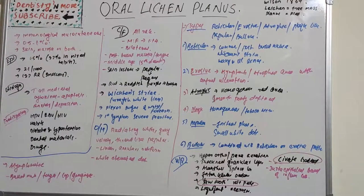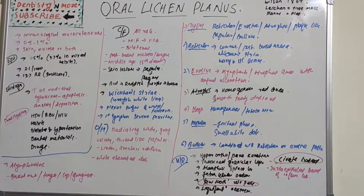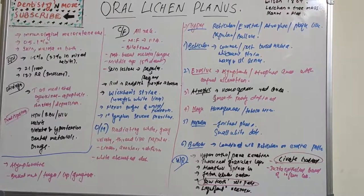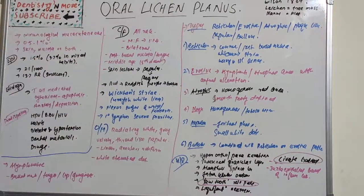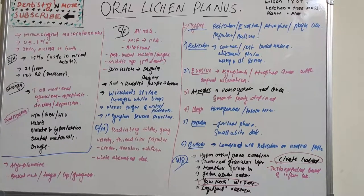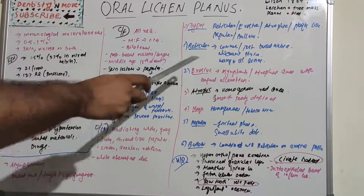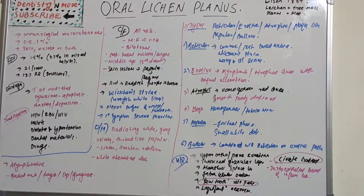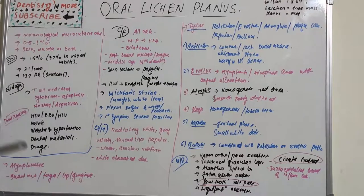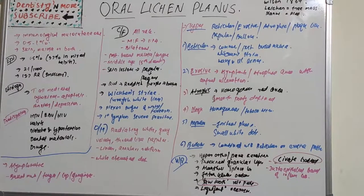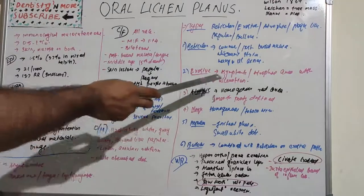The erosive type features atrophic areas with central ulceration of varying degree. The periphery of these atrophic regions is usually bordered by fine white radiating striae. Symptoms can include pain, burning sensation, bleeding, and desquamative gingivitis. There will be a pseudomembranous covering over the ulceration with keratosis and erythema.